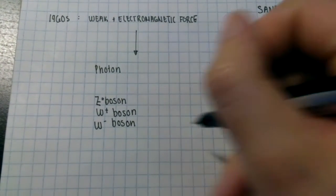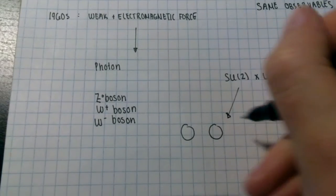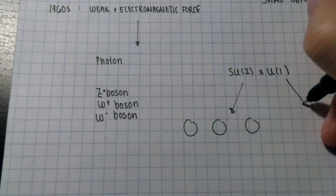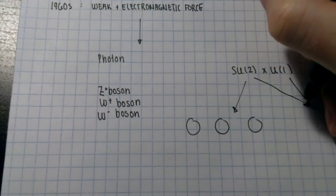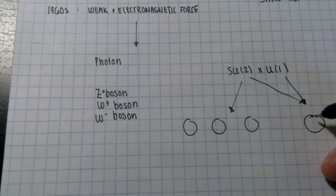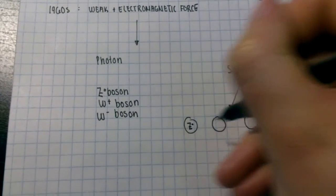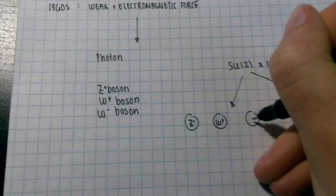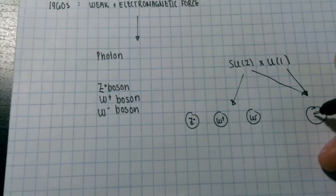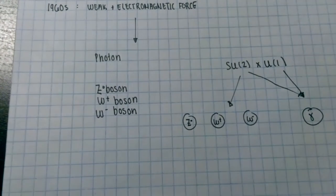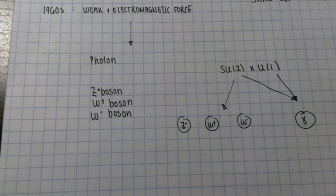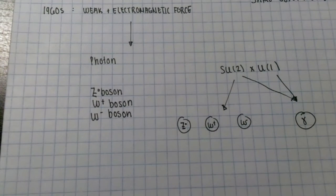The SU2 mathematical properties describe a triplet of particles. A combination of the SU2 and U1 describe another single particle. Turns out that the three particles are the Z0 and the two W bosons, and that the lone one is the photon. So a single theory gives rise to all four of them, and therefore represents both the electromagnetic and the weak interactions.